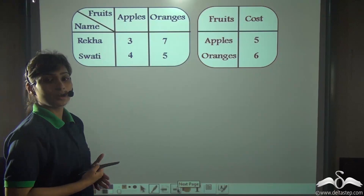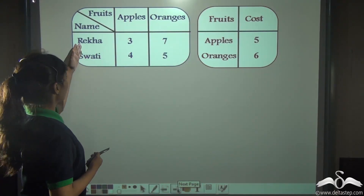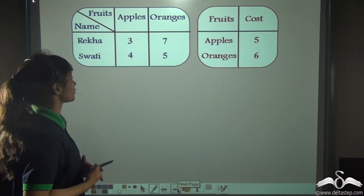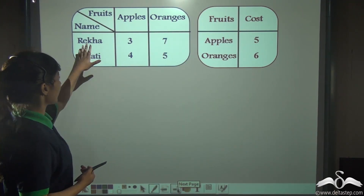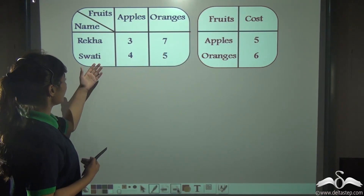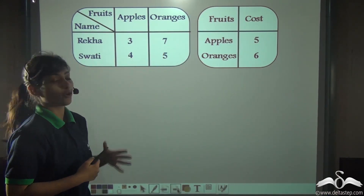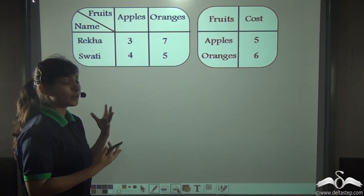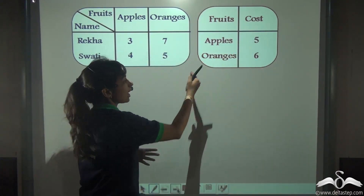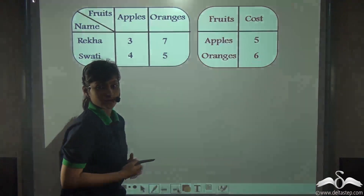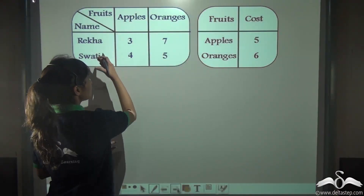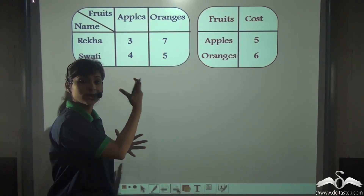Here we have been given some data. Two friends, Rekha and Swati, have bought some fruits — apples and oranges. Rekha has bought three apples and seven oranges while Swati has bought four apples and five oranges. We have also been given that apples cost five rupees each and oranges cost six rupees each. Can you tell me how much each of them spent individually on these fruits?